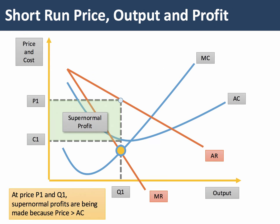We've looked at the short-run equilibrium in a different topic video, so let's just remind ourselves of where we ended up. In the short run, profits in monopolistic competition can be at any level depending on the revenue and cost curves. In our situation here, the firm is making super-normal profit because it's charging at output Q1 a price P1 significantly above the unit cost of production.